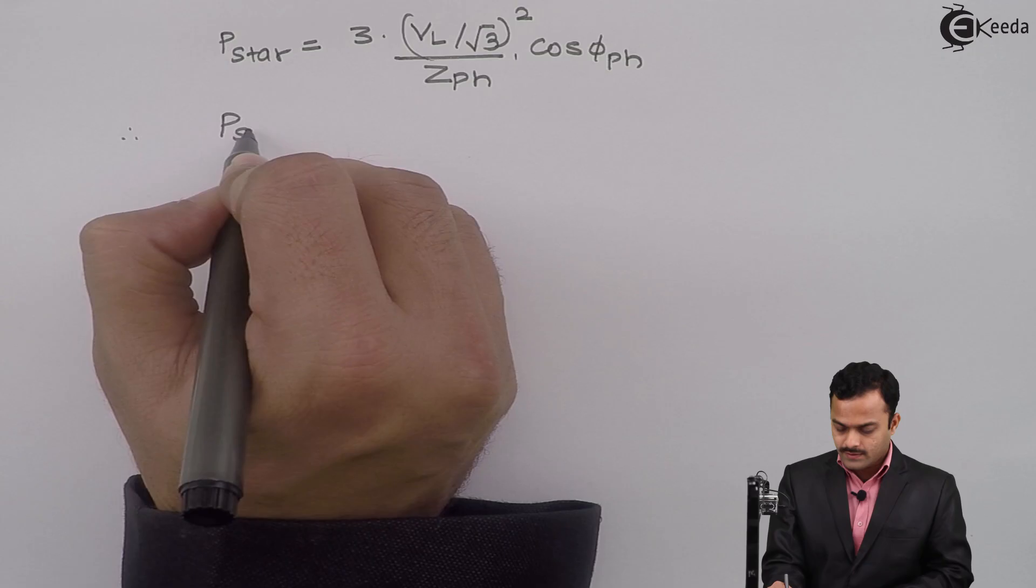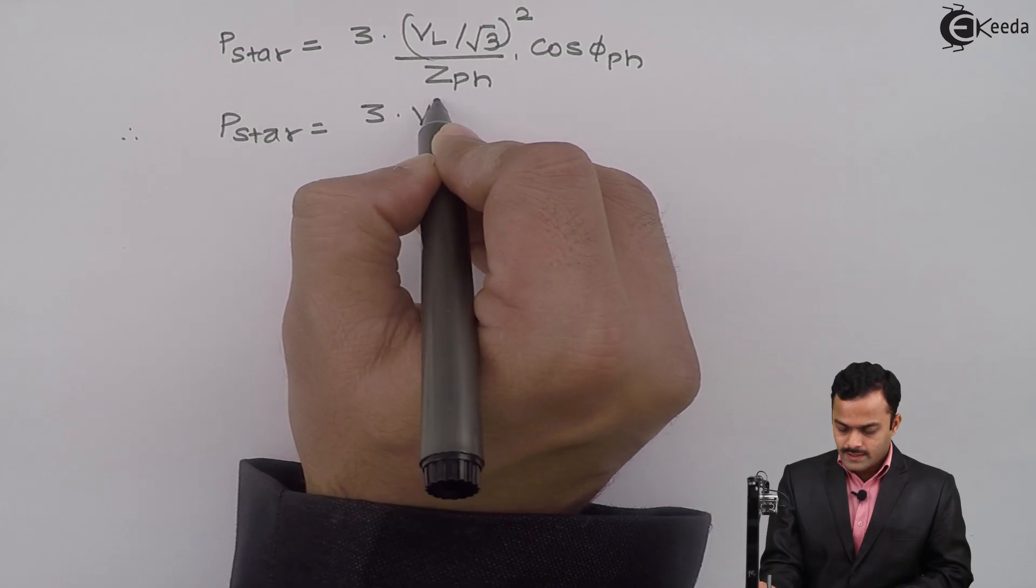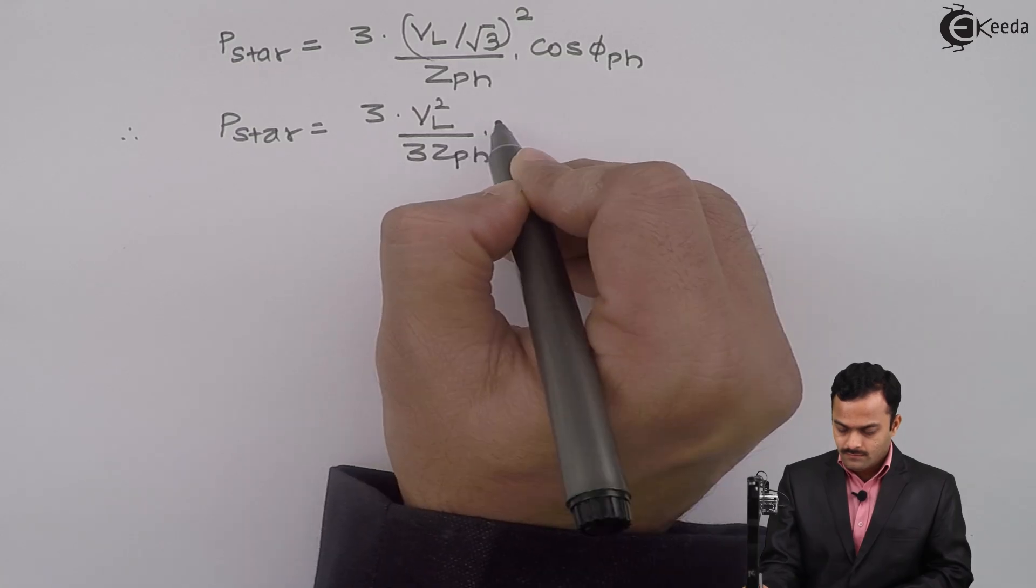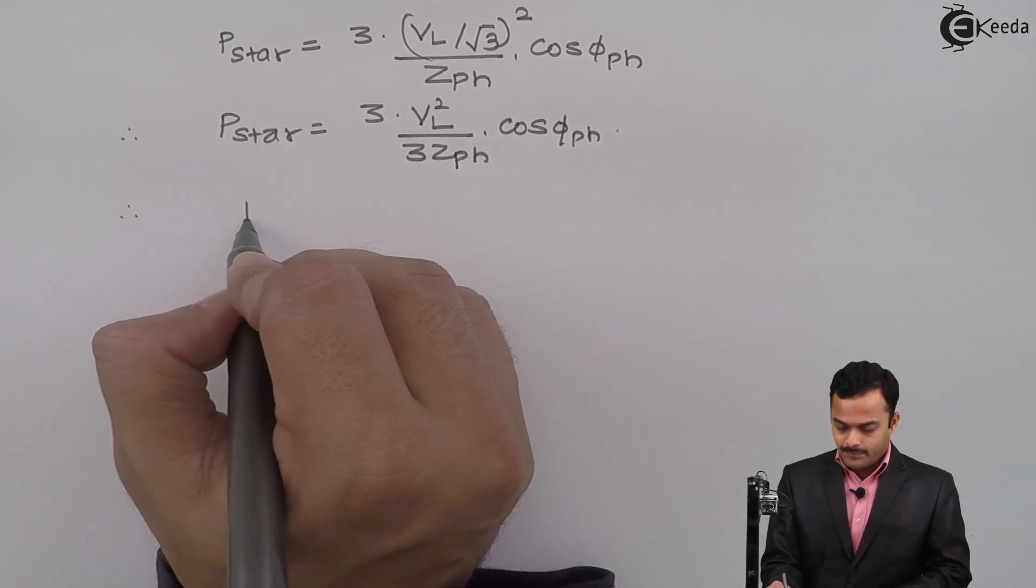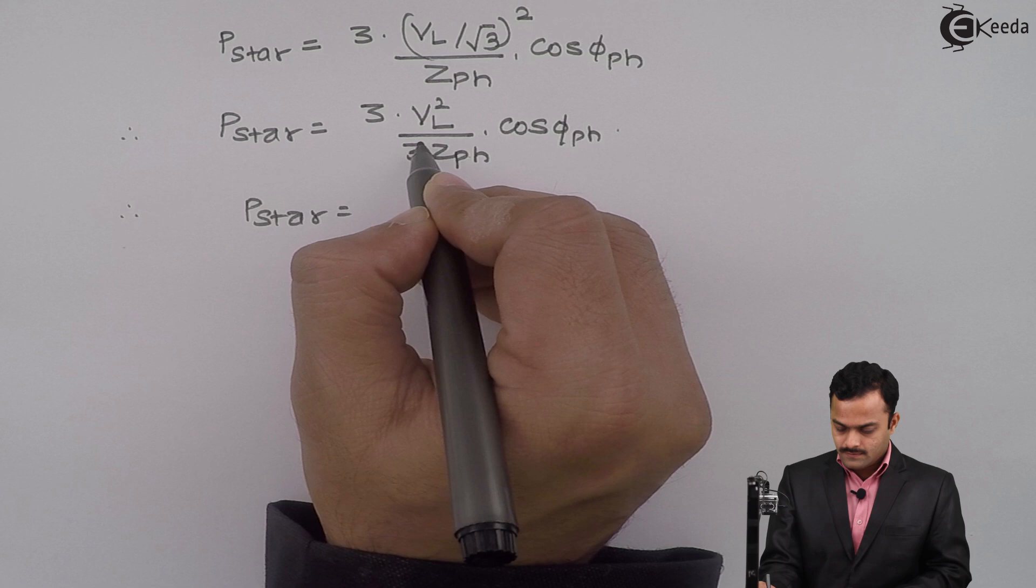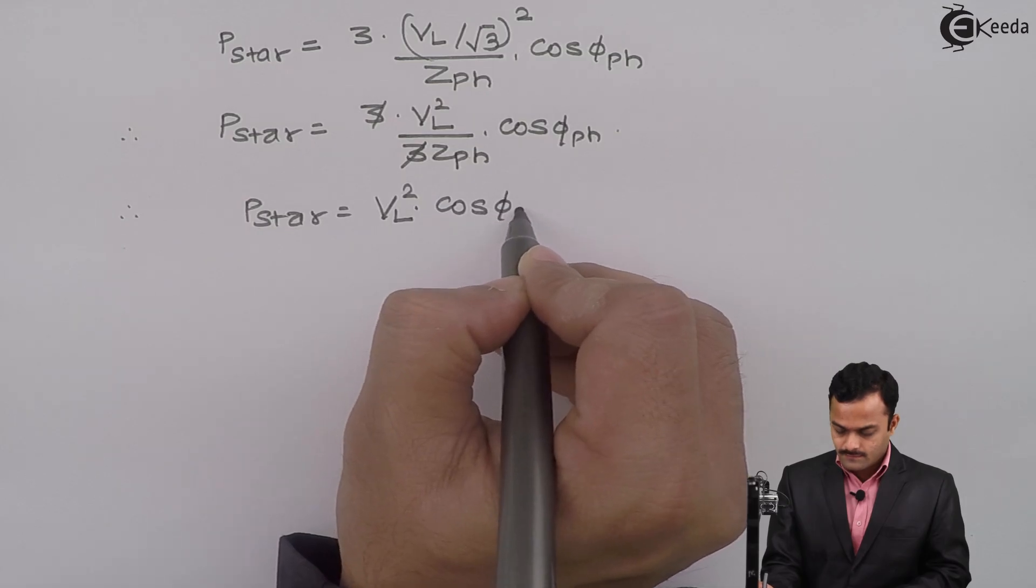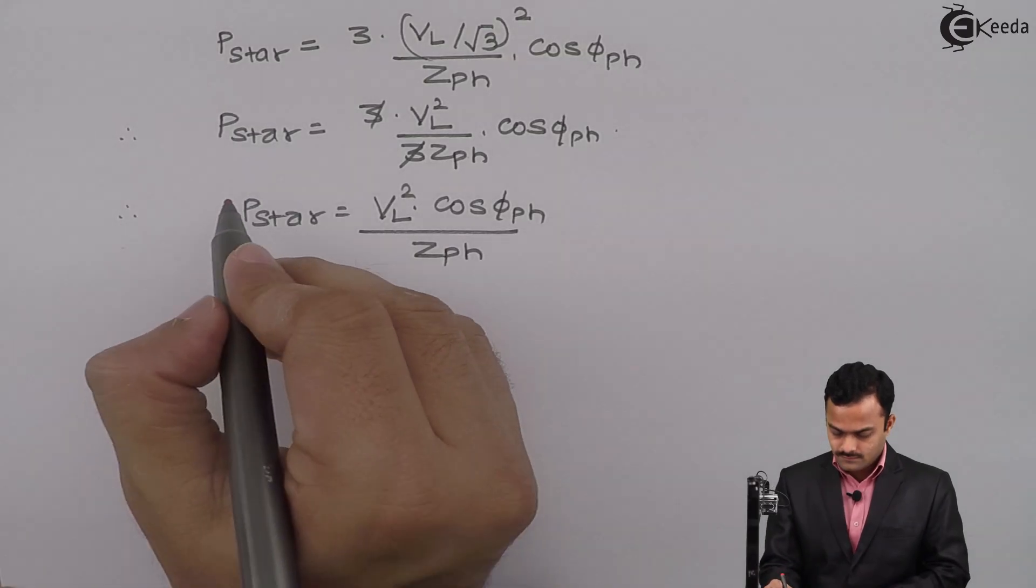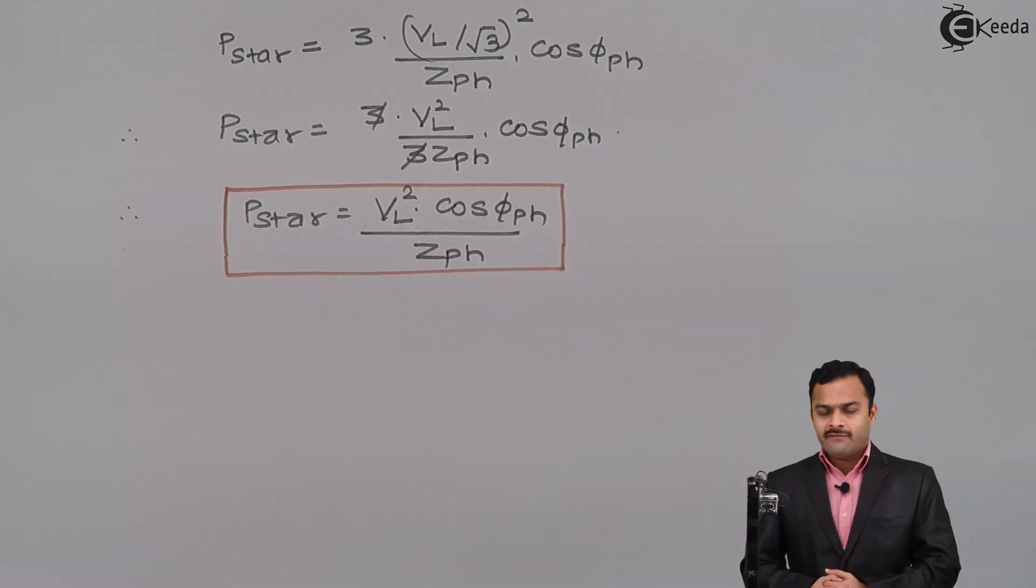So if we simplify, we will get P star as 3 VL square upon 3 ZPH multiplied by cos phi PH. Ultimately, I will get P star as VL square upon ZPH multiplied by cos phi PH. This is the expression I will get when a load is star connected.